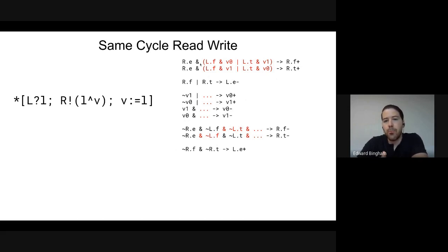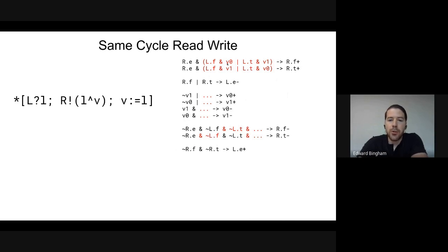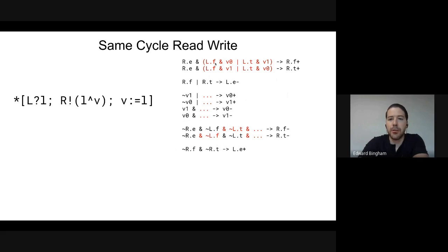Anytime we receive a false, we need to set V0; anytime we receive a true, we need to set V1. But R.F has both false and true, and during the time where we're setting the nLatch, V is in its neutral state of 1,1 — so V0 and V1 are both high. Also during that time, L.E can go low at any time, so L can end up going into its neutral state as well: L.F will go down, L.T will go down. Effectively, we lose all information from our inputs about the current state of the system, which means we need to store that state in the forward drivers rather than in the input requests.